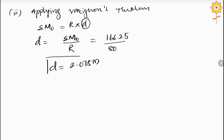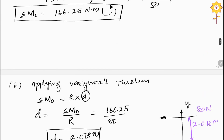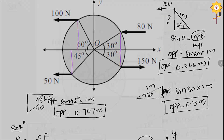We have now found the distance as well. Redrawing the final diagram with y-axis and x-axis, the resultant is 80 N acting from right to left, at a distance of 2.078 meter from point O. I hope you understood this type of problem. See you in the next lecture. Thank you.